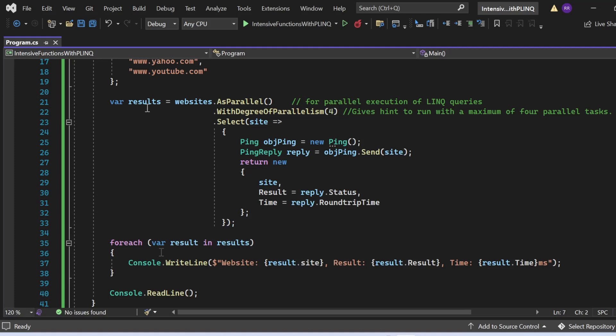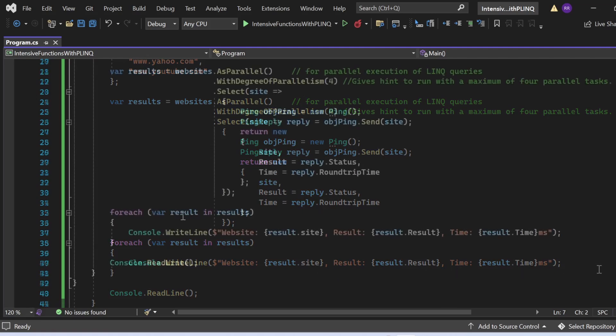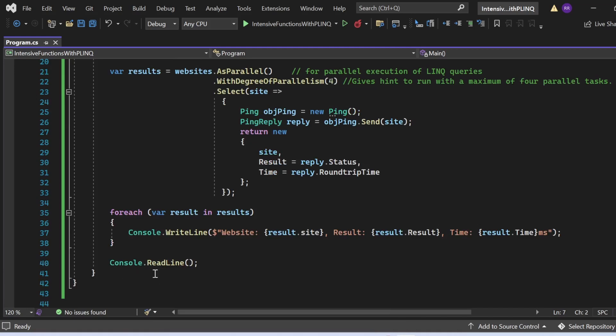Then there is a foreach loop that iterates through the results and prints the website URL, ping result, and roundtrip time to the console using console.WriteLine statement. And at last, I have written console.ReadLine. This line ensures that the console window remains open until the user presses the Enter key, allowing them to view the output.